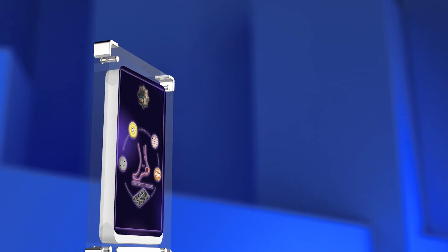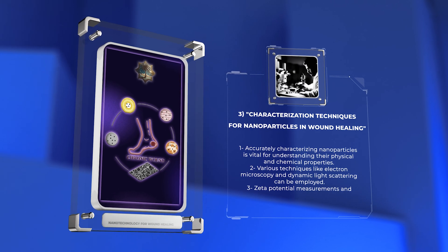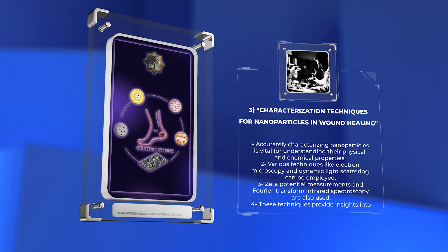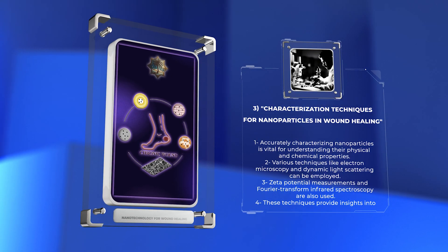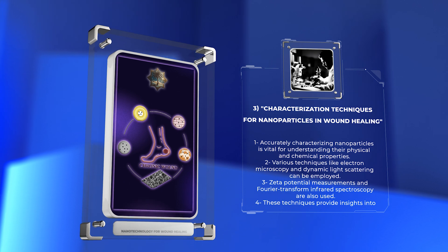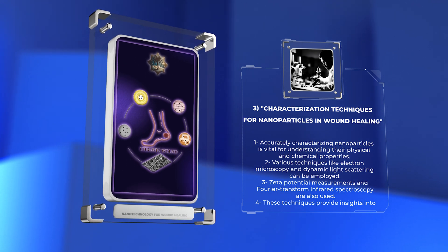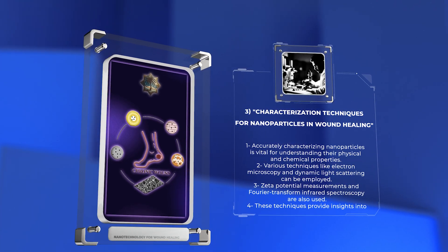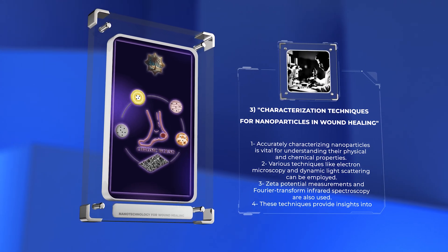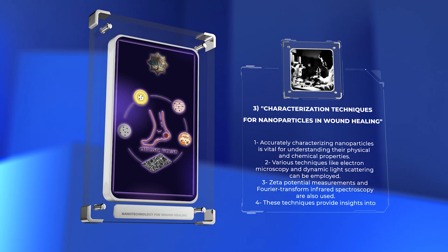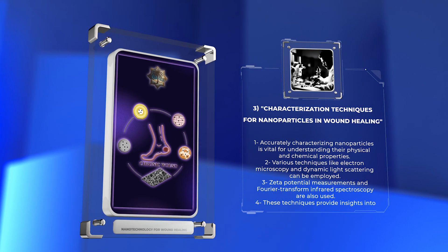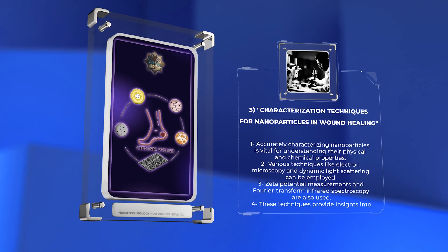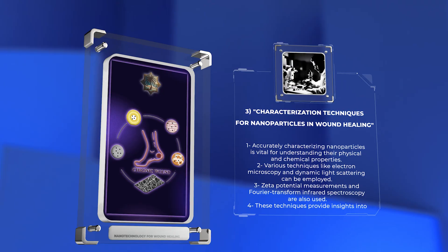Accurately characterizing nanoparticles is vital to comprehend their physical and chemical properties and to evaluate their applicability in wound healing. Various techniques can be employed for this purpose, including electron microscopy, dynamic light scattering, zeta potential measurements, and Fourier transform-infrared spectroscopy. These techniques allow for a thorough understanding of nanoparticle attributes such as size, shape, surface charge, stability, and chemical composition. By utilizing these characterization techniques, researchers gain valuable insights into the nanoparticles' behavior and their potential to enhance wound healing processes.